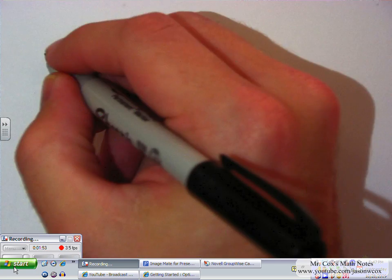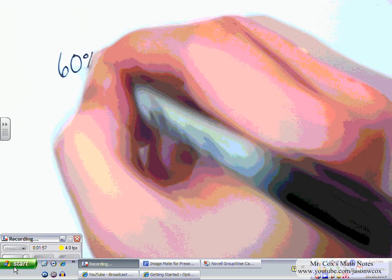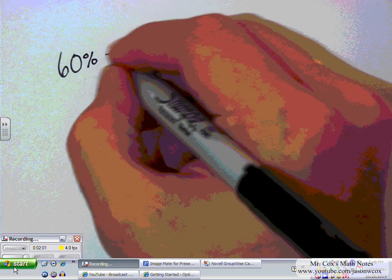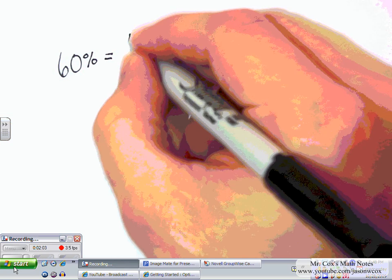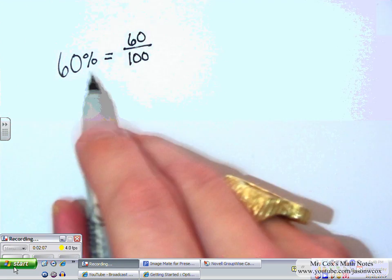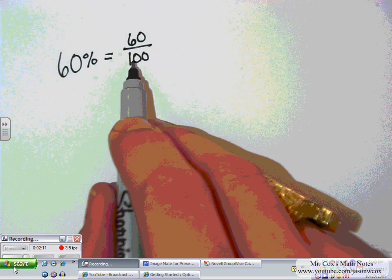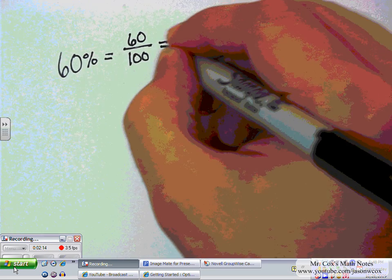Let's try another one. Let's try 60%. I want to make that into a fraction. Well, again, I start by making that equal to 60 over 100. Because that percent sign is always going to tell me that that number is a ratio over 100. So, 60% equals 60 over 100.